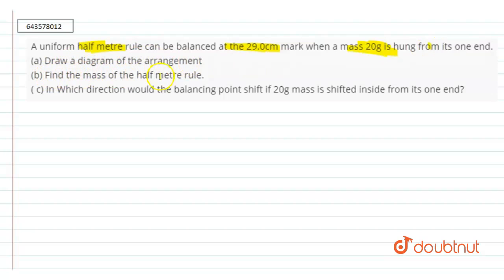In second part we have to find the mass of the half meter rule. And third part is in which direction would the balancing point shift if 20 gram mass is shifted inside from its one end.